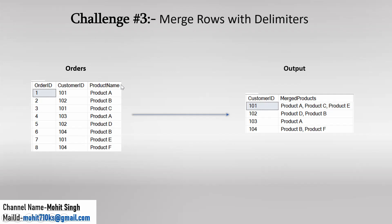So here we have an input table named orders, and in this table we have three columns: order ID, customer ID, and product ID. We have some sample data in this table. The requirement is, if you observe the output table carefully, we have two columns: customer ID and multi-product.